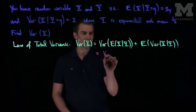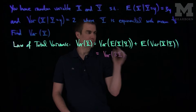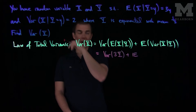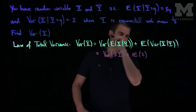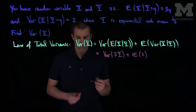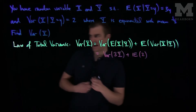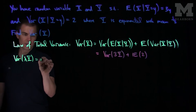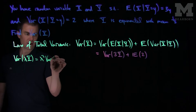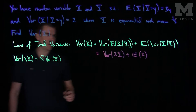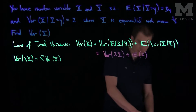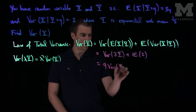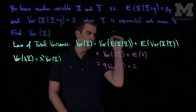So this is the variance of 3y, plus the expected value of the variance of x given y, which is just 2. We can use the rule that the variance of λx is λ² times the variance of x. So I can take that 3 out of the variance and it will turn into a 9. So this will be 9 times the variance of y, plus 2.